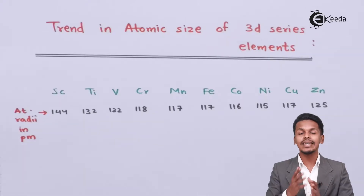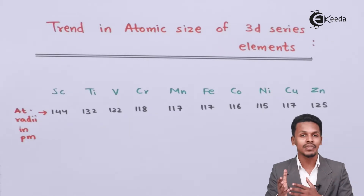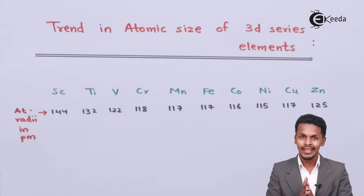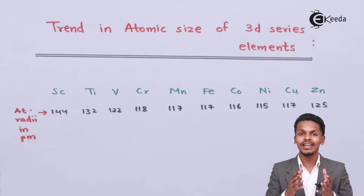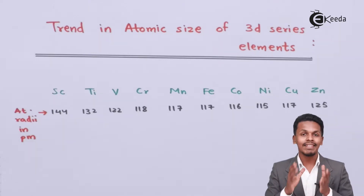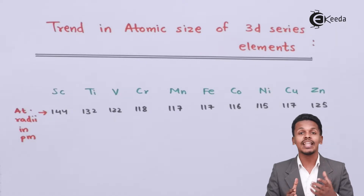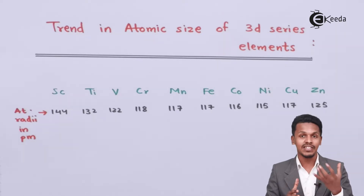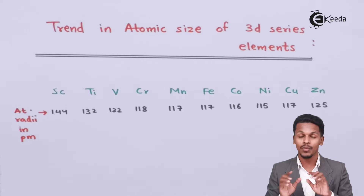If we are discussing about the 3d series elements starting from scandium and ending with zinc, we understand that across a particular period the atomic size goes on decreasing. So we can expect that scandium will have the highest atomic size and zinc will have the lowest atomic size.